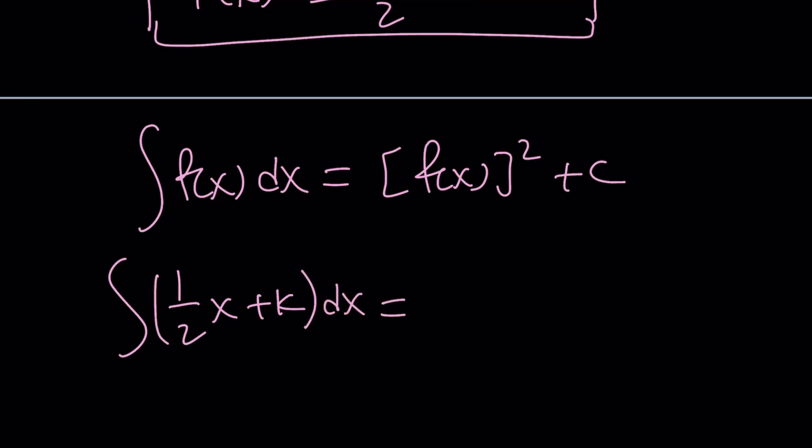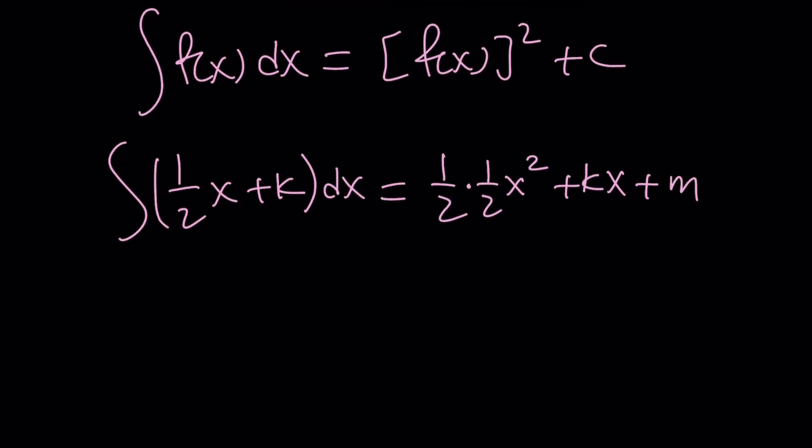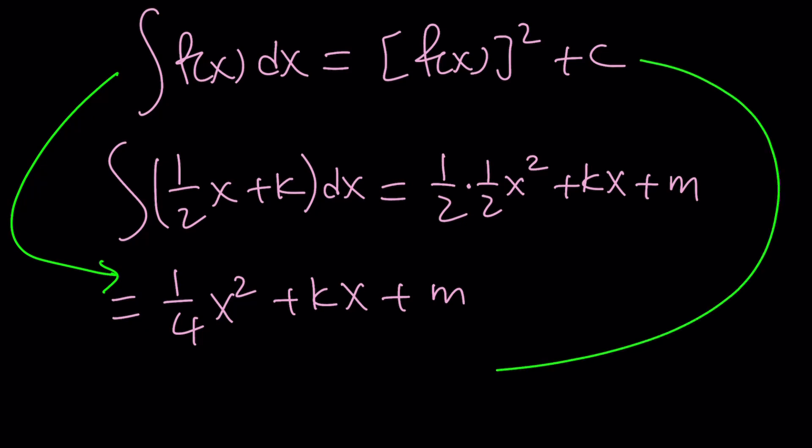When we do, we're going to get 1 half of 1 half x squared plus kx plus m, another constant. We're going to write it as 1 fourth of x squared plus kx plus m. This is the left-hand side. What about the right-hand side?